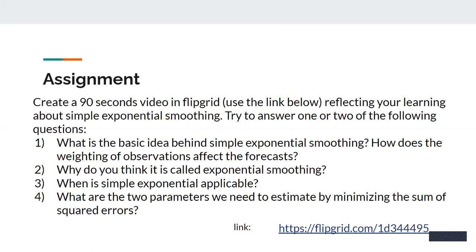And then what you do is to use that platform, Flipgrid, and then record a video of yourself that tries to answer one or two of the following questions here. Number one is what's the basic idea behind simple exponential smoothing and how does the weighting of observations affect the forecast? Number two is why do you think it is called exponential smoothing? Number three, when is simple exponential smoothing most applicable? And number four, what are the two parameters that we need to estimate by minimizing the sum of squared errors? And there is the link there for our Flipgrid class. And then just submit your assignment.